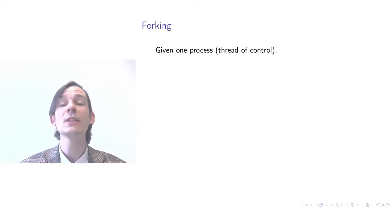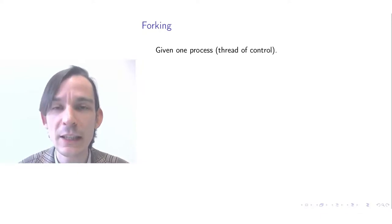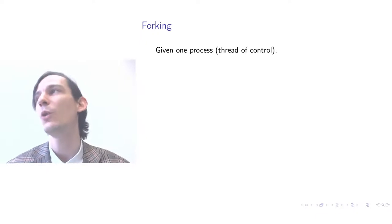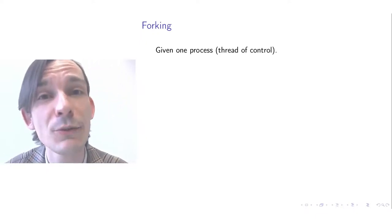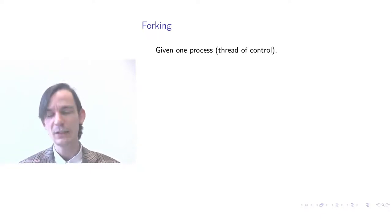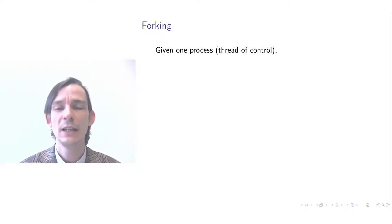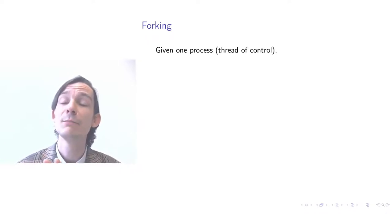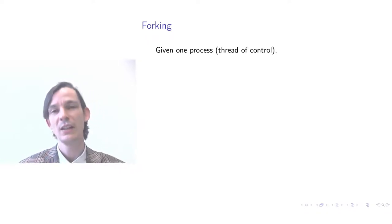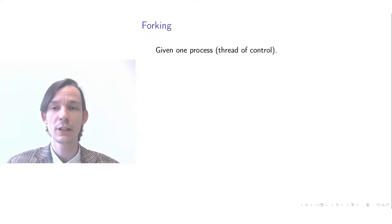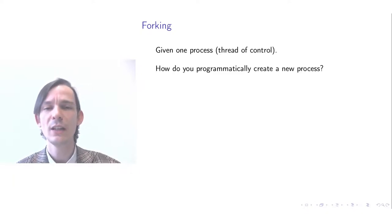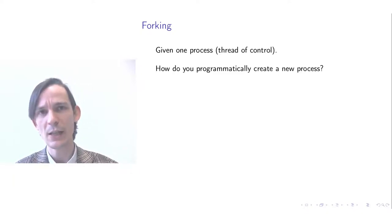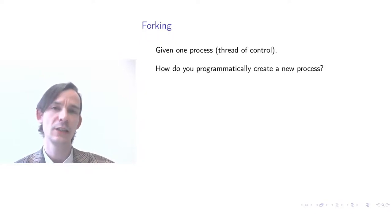Now let's consider a way of programmatically working with processes. Suppose we start with one process, as before, with a program that starts executing at the beginning. How could we then create multiple processes? One way of doing that is forking. Let's suppose we start with a single thread of control — forking is a way of expressing in the program that you want to programmatically create a new process.